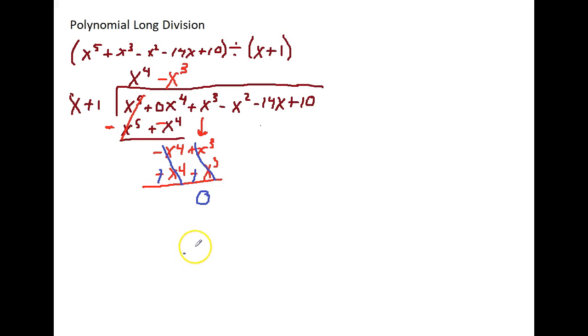Okay, so that means I'm not going to just bring down one. I'm going to bring down my next two terms. So I have a negative x squared and a negative 14x. And then I say, what times 1x gives me negative x to the 2nd power? Well, it's going to be a negative 1 and an x. Negative x times x gives me negative x to the 2nd power. Negative x times positive 1 gives me negative 1x.